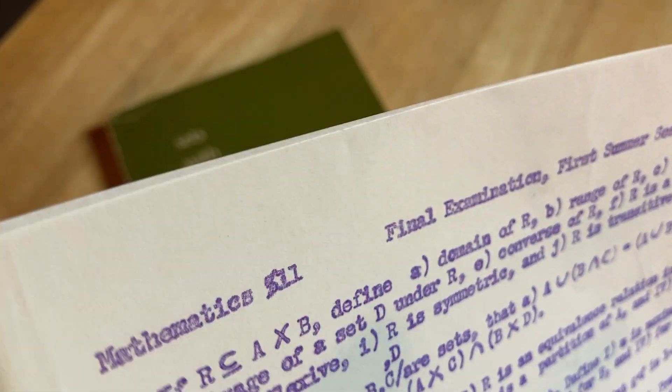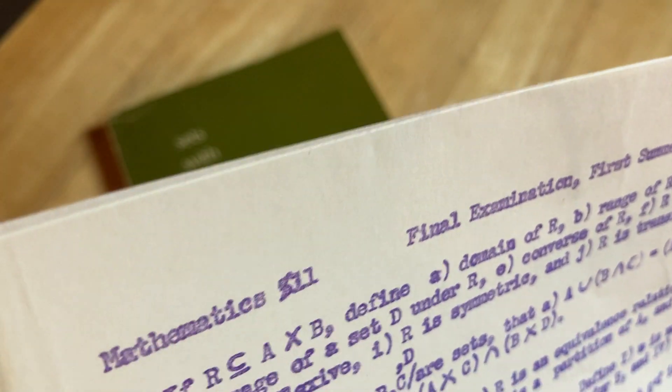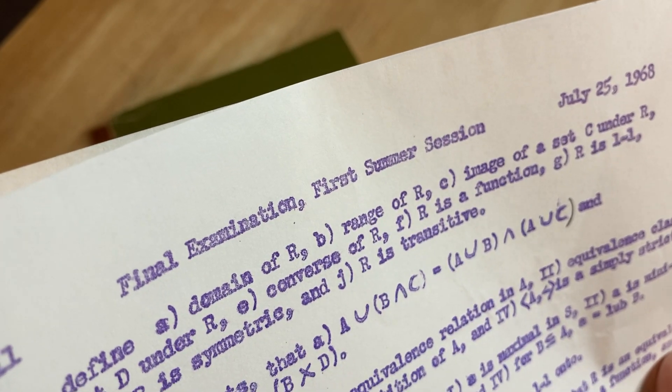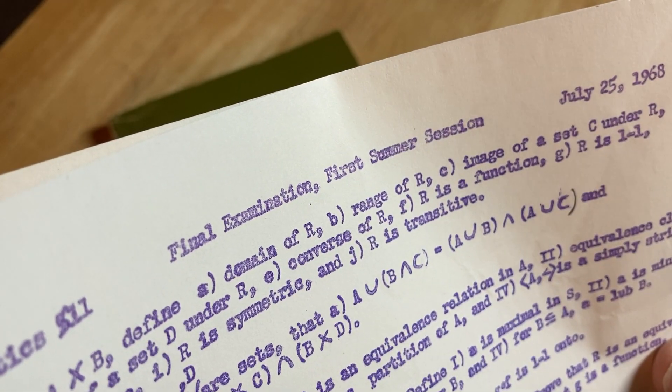So it's a relation. And so they're asking for the domain and the range and the image of a set C under R. I see.